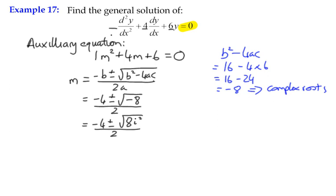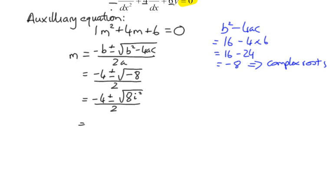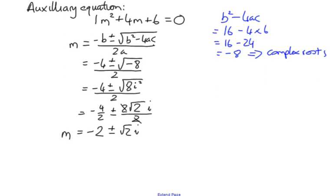All over 2. I can split up the real and imaginary part, so it's -4/2 ± (√8)i/2. √8 is the same as 2√2, so we've got 2√2 and the square root of i² is i, which means we can simplify that to -2 ± √2i. So that's the two complex solutions to our auxiliary equation.